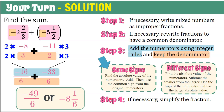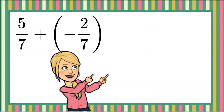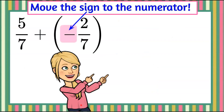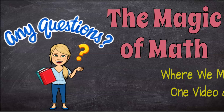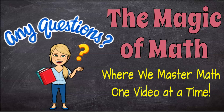Step four: simplify the fraction. Negative 49 over six is in simplest form, but it can be written as a mixed number. Six goes into 49 eight times with one left over, so negative eight and one-sixth, depending on how your teacher wants you to answer. That's our four steps to adding rational numbers that are fractions — don't forget to move any negative signs to the numerator. Thanks for joining at the Magic of Math, where we master math one video at a time. Have a great day and come back soon.